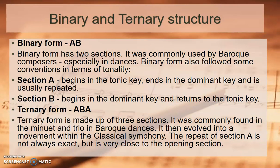Binary form (A, B) has two sections and was commonly used by Baroque composers, especially in dances. Binary form also followed conventions in terms of tonality: section A begins in the tonic key and ends in the dominant key, and is usually repeated. For example, in C major, it starts in C major, ends in G major (the dominant), and you will see the repeat sign.